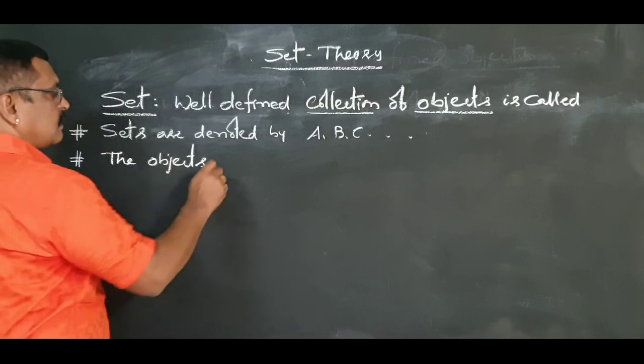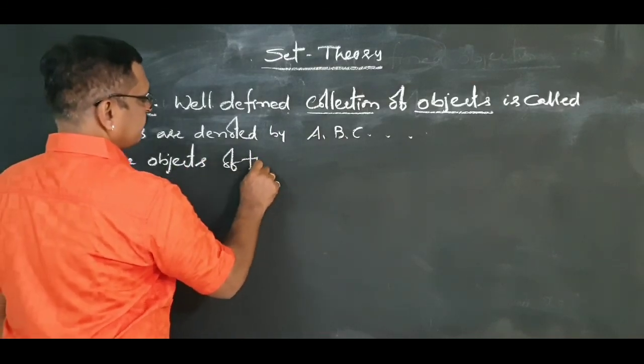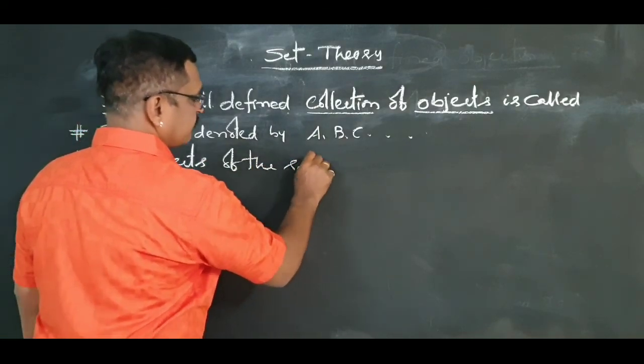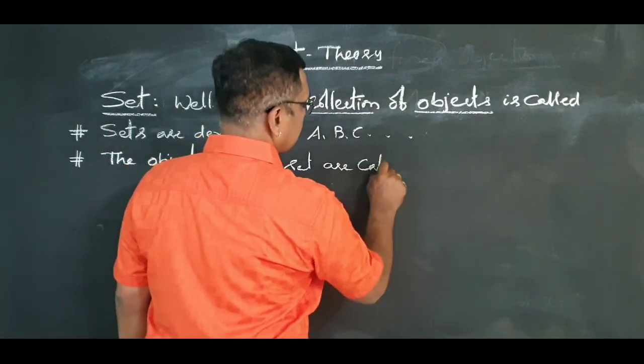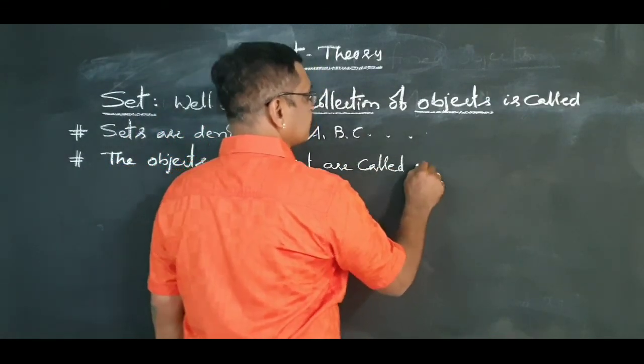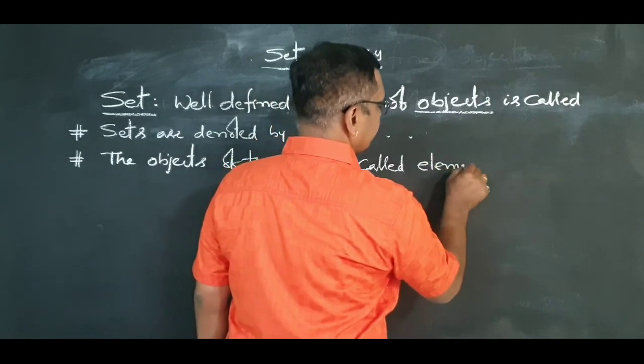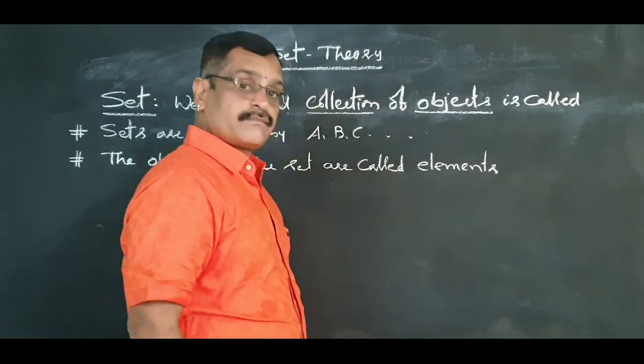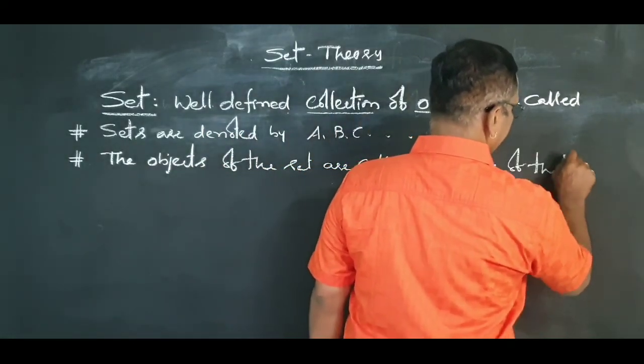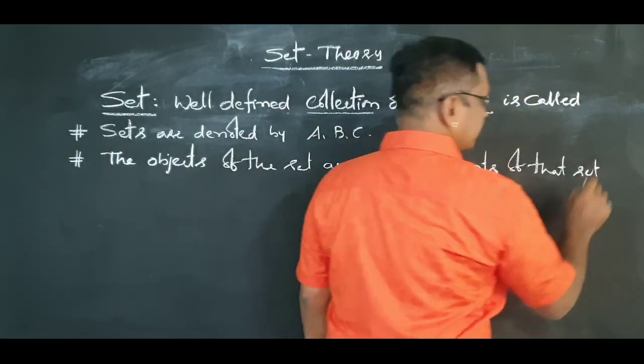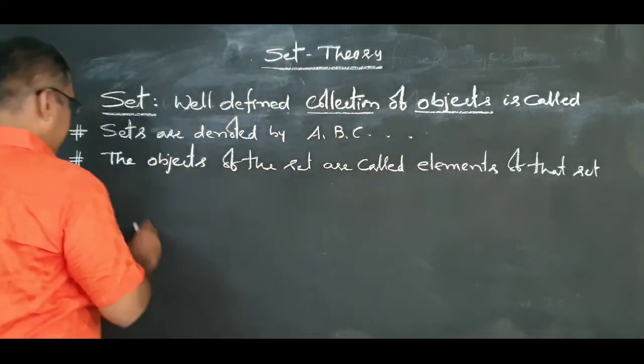The objects of the set are called elements of the set, and these elements are denoted by small letters: a, b, c, r, x, y.